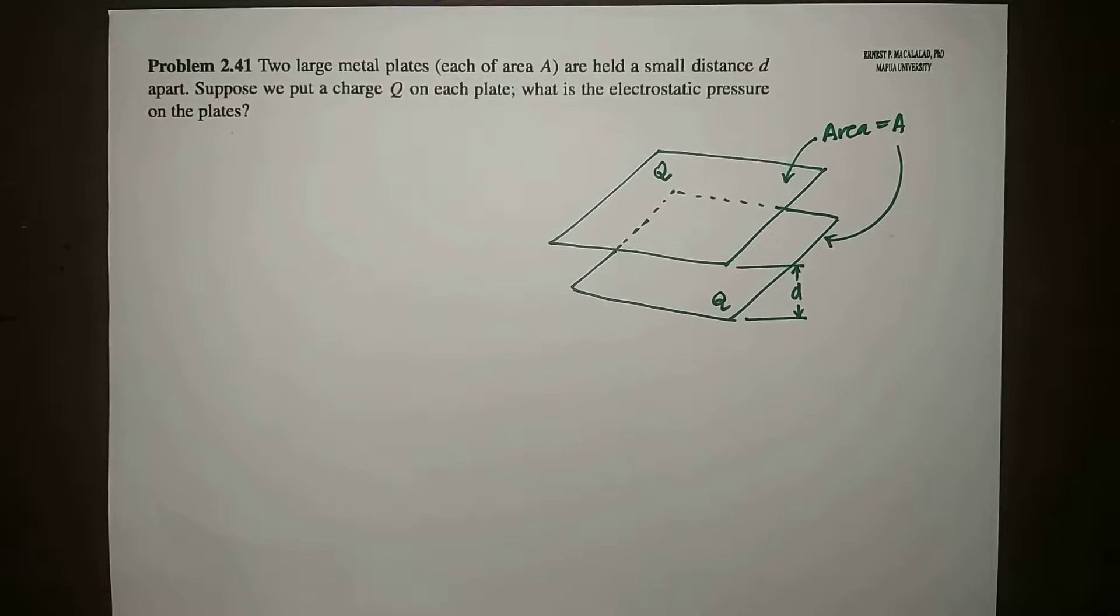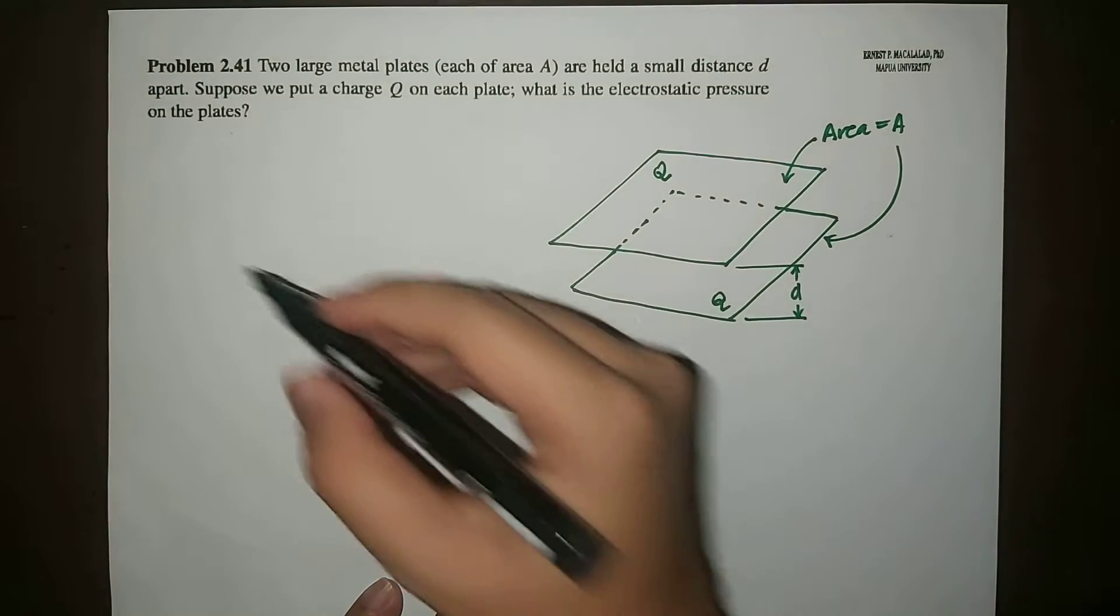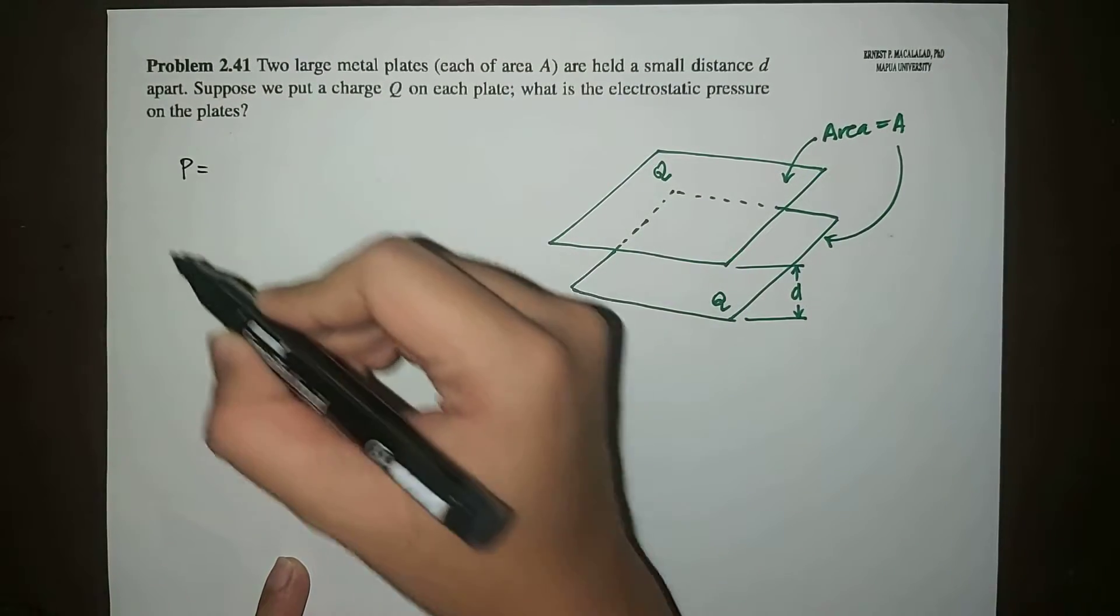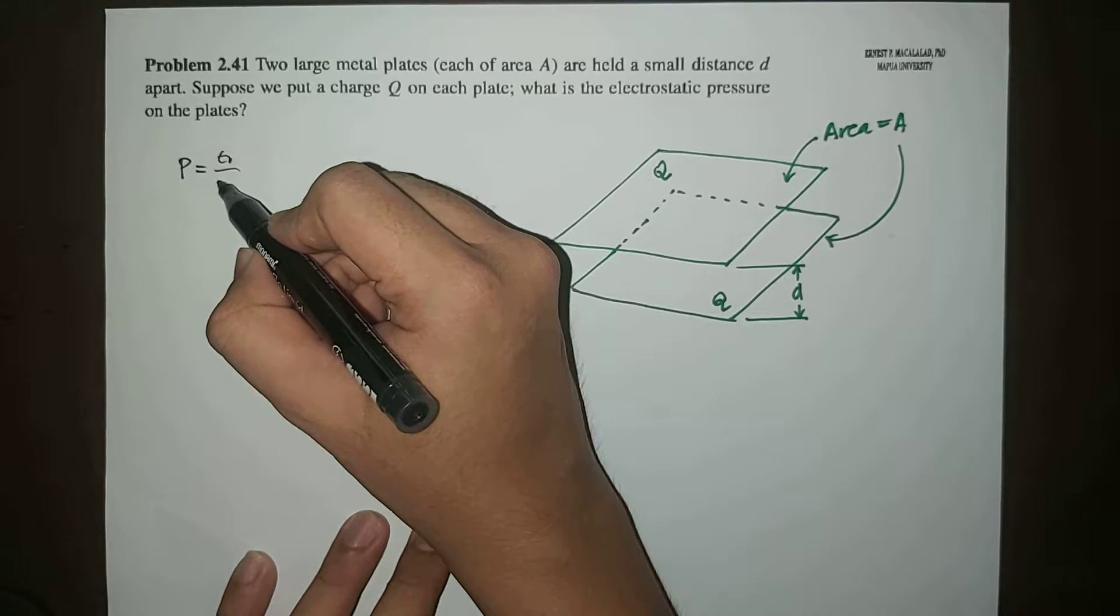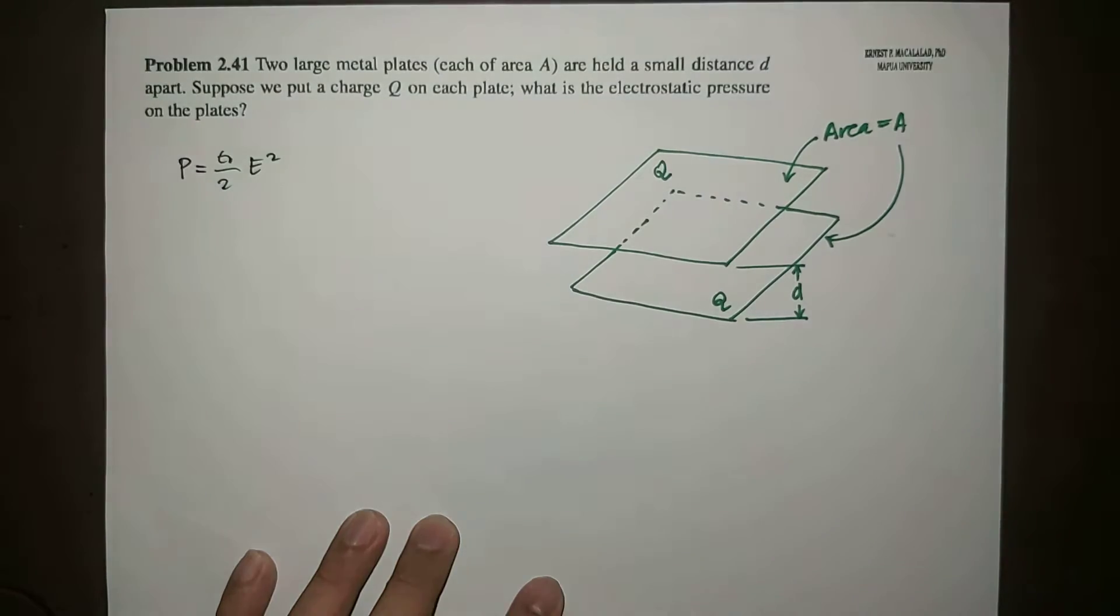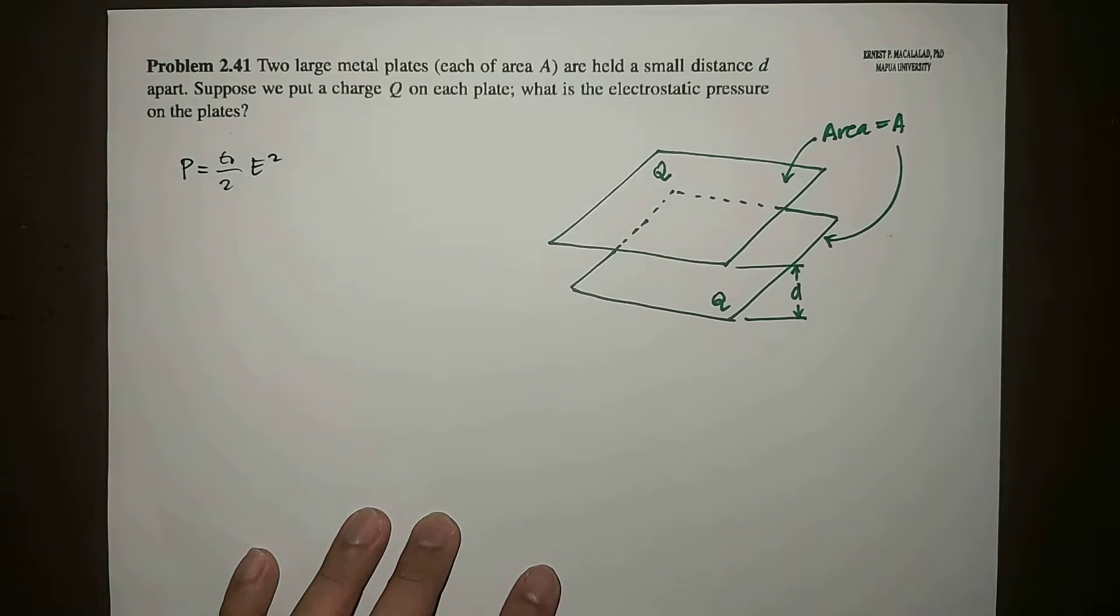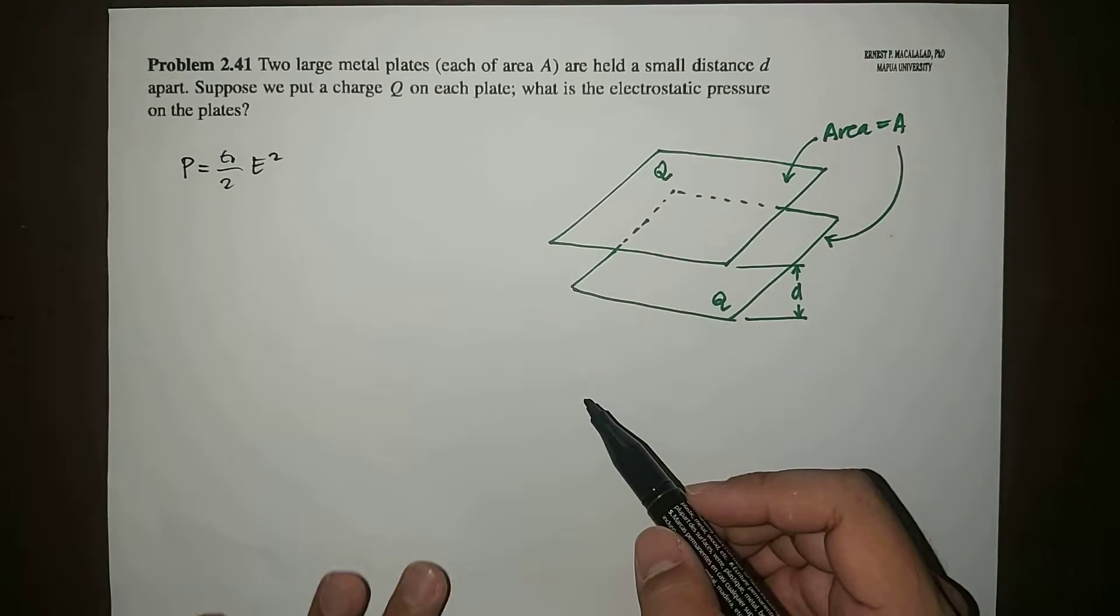Now how do we approach this problem? We know that the electrostatic pressure P is given by epsilon naught over 2, E squared, where E is the electric field of the system. So if we're going to rewrite this into a side view...